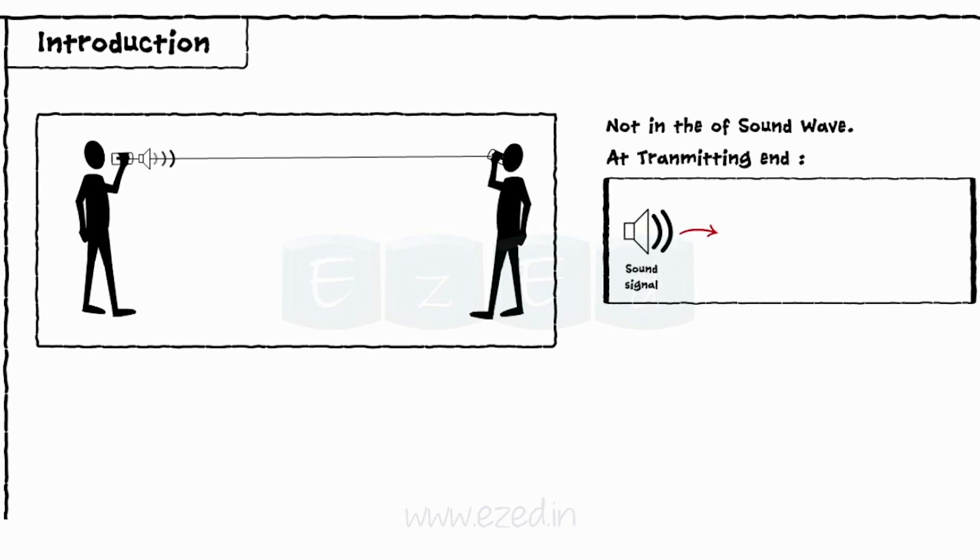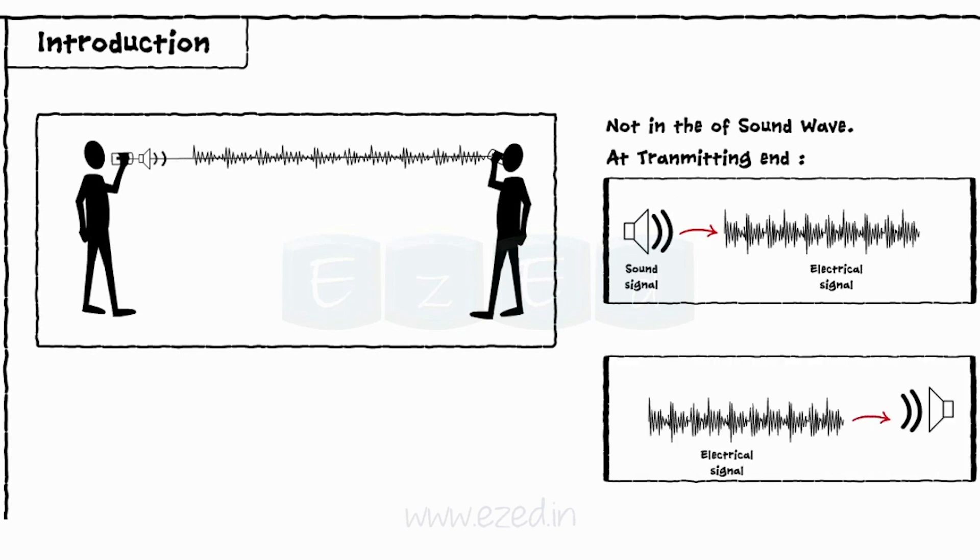First, it is converted into an equivalent electrical signal at the transmitting end. This electrical signal then travels through the telephone cable and then again at the receiving end, it is converted back to the original sound signal.